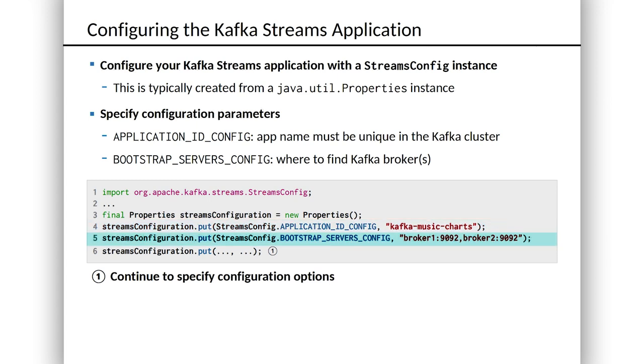bootstrap.servers.config is pointing the stream processing application to the Kafka cluster itself. Remember, this code is not running on a broker — it's running outside of the Kafka cluster proper, so this application needs to know where the cluster is. It's typical to put the names or IP addresses of two or three brokers in this list. That way, when an instance of this application wakes up, it can talk to a broker and get everything it needs to know about the cluster, about what partitions it's processing, and so on. In production, you never want this to be just a single broker, because that's a single point of failure. If that machine goes down or is replaced, this application can never boot — and we get embarrassing episodes of downtime. So make sure you've got two or three servers listed in bootstrap.servers.config.